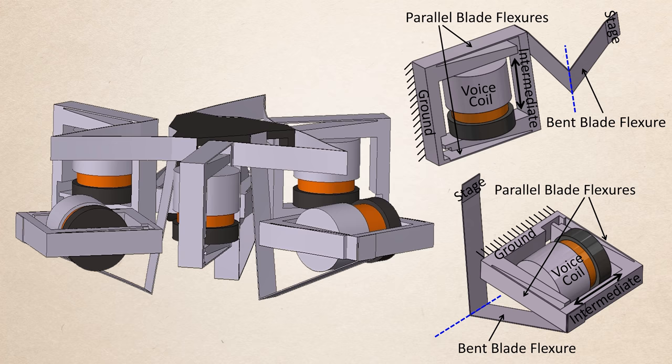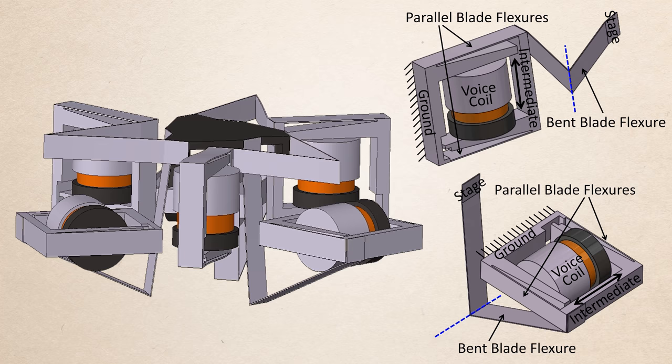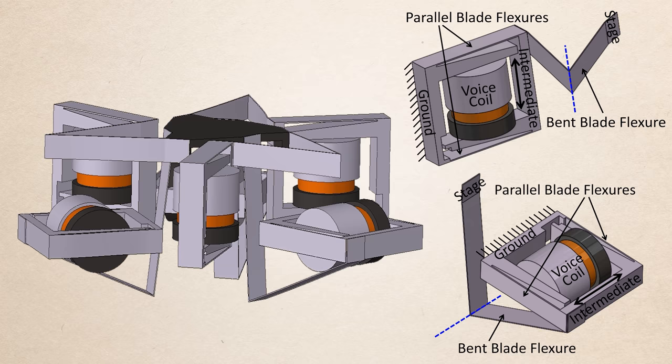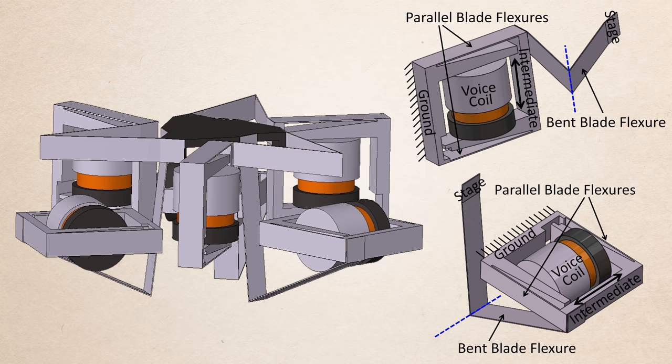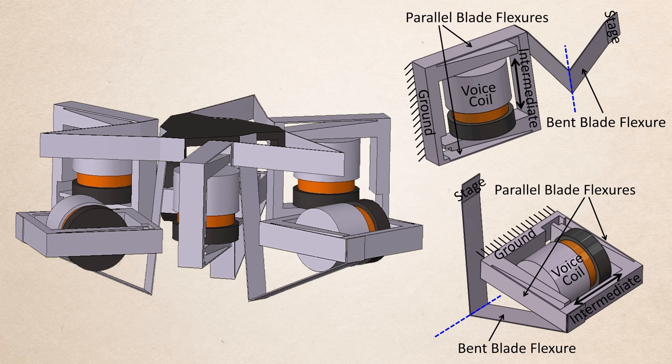The bent blade flexures constitute the decoupled actuation limb's decoupling flexures which decouple their corresponding actuator from the motions induced by the other five actuators in the system. Thus, although the bent blade flexures stiffly pass the translation motion of their actuators along their creases axis to the system's stage to successfully drive it, if any of the other actuators in the system drive the stage, the bent blade flexures will deform to minimize the effect of those stage motions on the bent blade flexures' corresponding actuator.